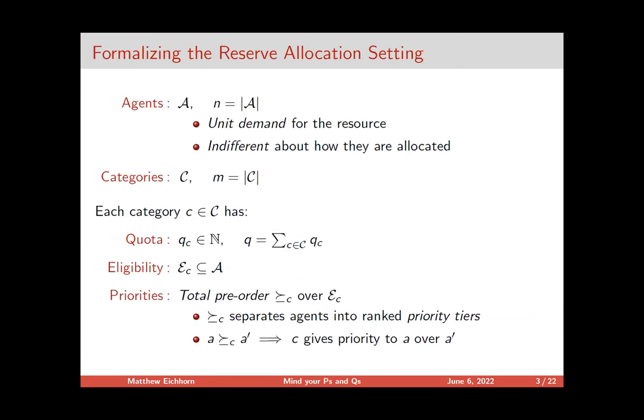The response to this is to set up something called a reserve allocation setting, where we think about distributing care in a two-stage approach. First, I take all the units available and pass them off to categories, which personify these considerations, and then let the categories further pass things along to individuals based on their own criteria. So I might set aside some medical units for people based on employment, and set aside others for nursing home residents specifically.